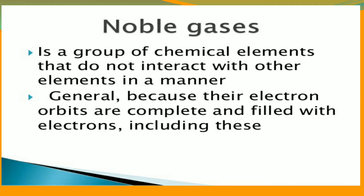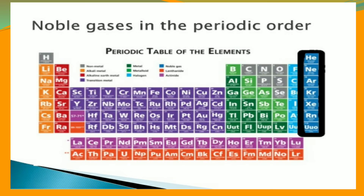The noble gases are present in the periodic table. You can see here the position of the noble gases in the periodic table — they are at the right side, near to the P block elements. The elements included in noble gases are helium, neon, argon, krypton, xenon, and radon.